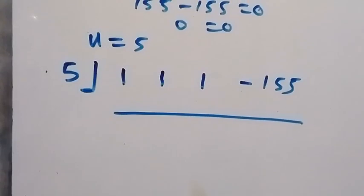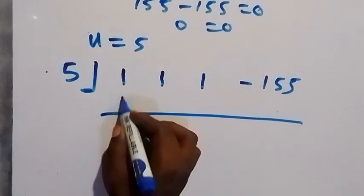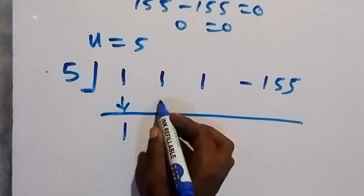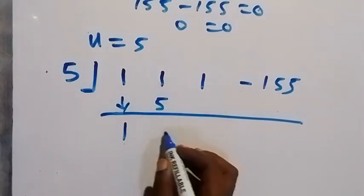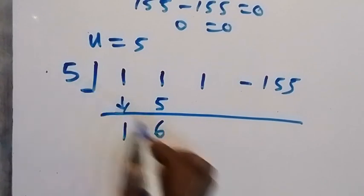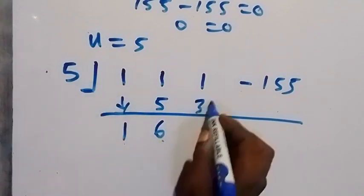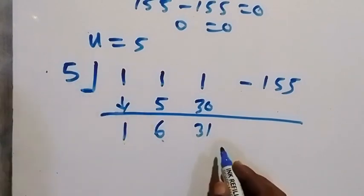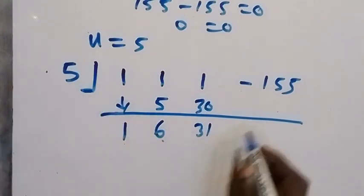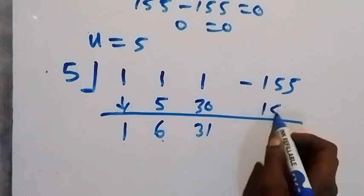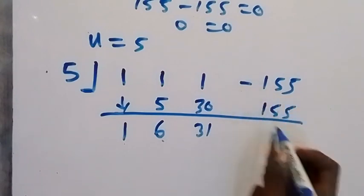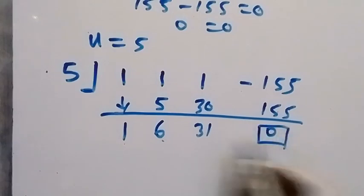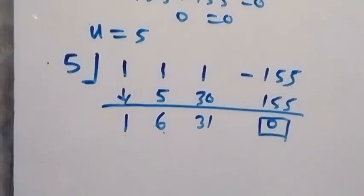We drop the first number, which is 1. Then 5 times 1 is 5 — we write it here and add, giving 6. Also 5 times 6 is 30 — we add this, giving 31. We also multiply 5 times 31, that's 155 — we add it, that becomes 0. This confirms that 5 is a root.